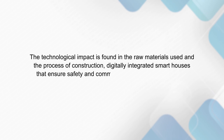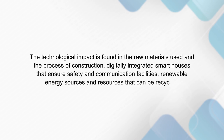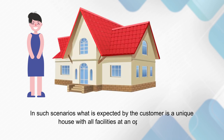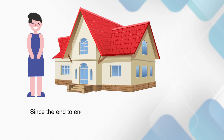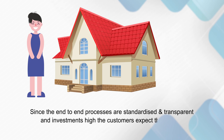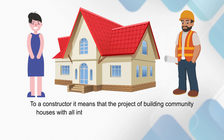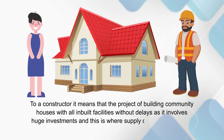Technological impact is found in raw materials used and construction processes, including digitally integrated smart houses that ensure safety and communication facilities, and renewable energy resources that can be recycled. In this scenario, the customer expects a unique house with all facilities at an optimal price. Since end-to-end processes are standardized and transparent and investment is high, customers expect houses to be handed over within 6 to 12 months. This involves huge investment, and this is where supply chain management becomes a strategic tool for competitive advantage.